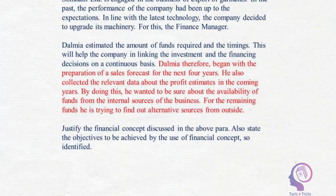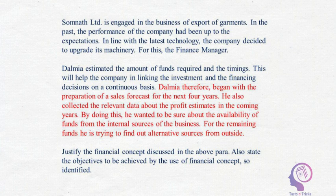The key lines highlighted in the question are: Dalmia began with the preparation of a sales forecast for the next four years. He collected relevant data about the profit estimates in the coming years. By doing this, he wanted to be sure about the availability of funds from internal sources, and for the remaining funds he is trying to find alternative sources from outside. It is clear that he is ensuring the availability of funds and making sure there is no lack of funds.